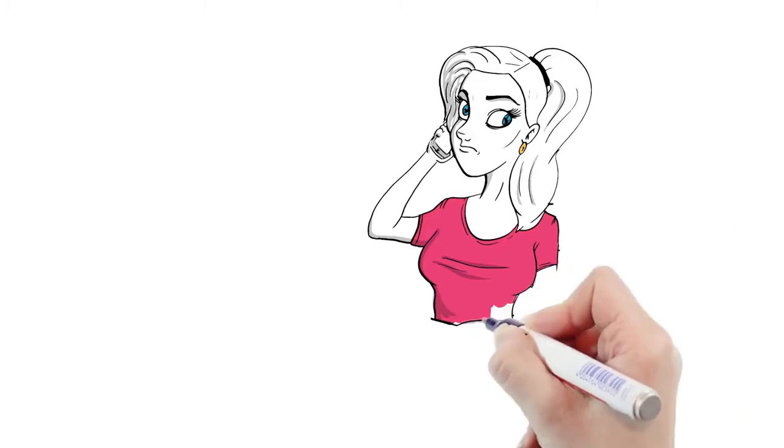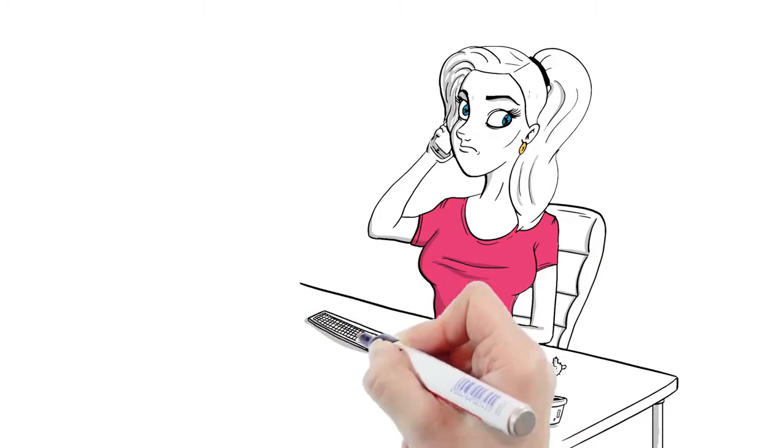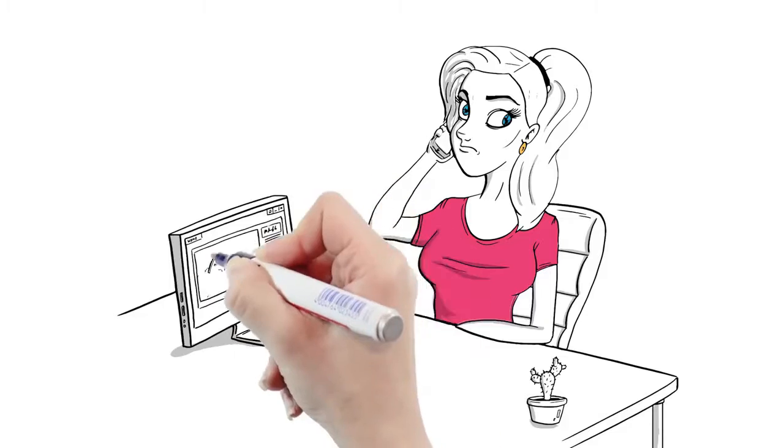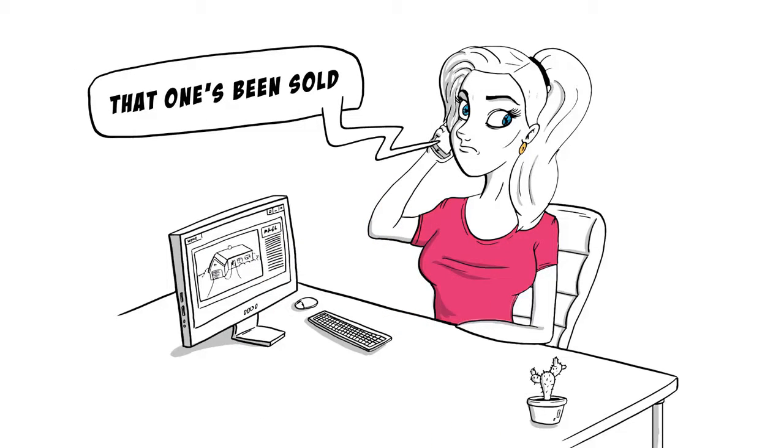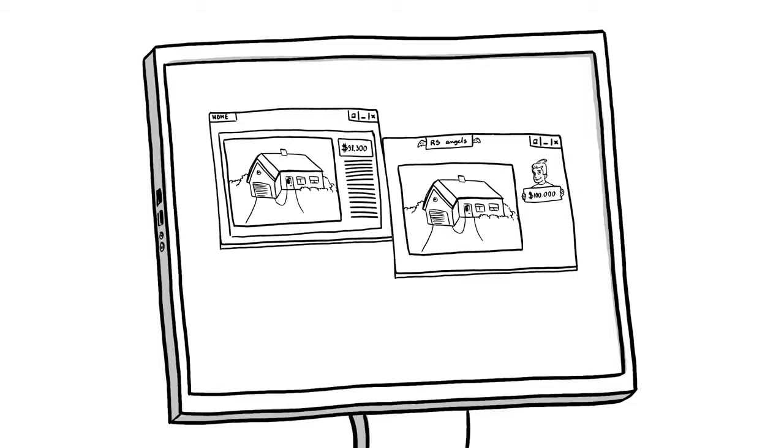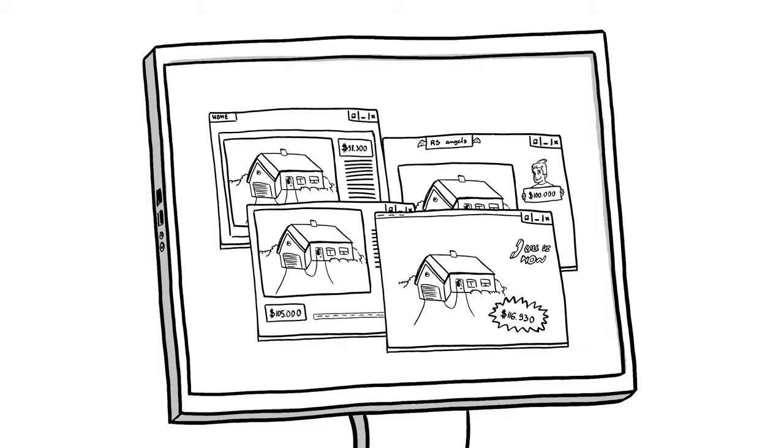Sure, there are other places you can go to find listings online, but it's so frustrating to search and search, find a home you like, and then find out that it's been sold or taken off the market. Or having to look on several different websites to get new listings or current price information.